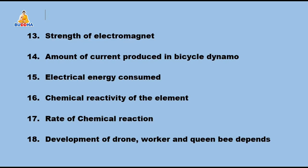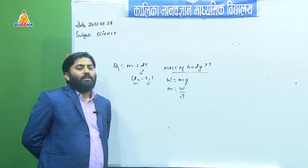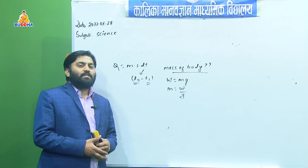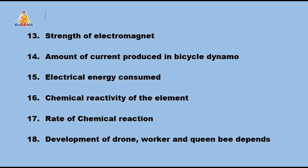Other factor questions: strength of an electromagnet depends upon the amount of current supplied and the number of turns of the coil. Amount of current produced in a bicycle dynamo depends upon the strength of the magnet, the number of turns of the coil, and the distance between the magnet and the coil. Electrical energy consumed depends upon the number of electrical devices, the power of each device, and the time used. Chemical reactivity of an element depends upon the size of the atom and valence electrons. Rate of chemical reaction depends upon temperature, light, catalyst, surface area, and aqueous state. Development of drone, worker, and queen bee depends upon the diet they are fed and whether the egg is fertilized or unfertilized.